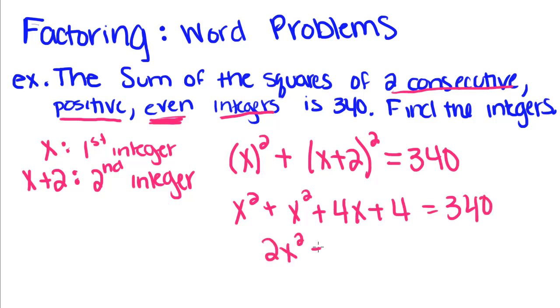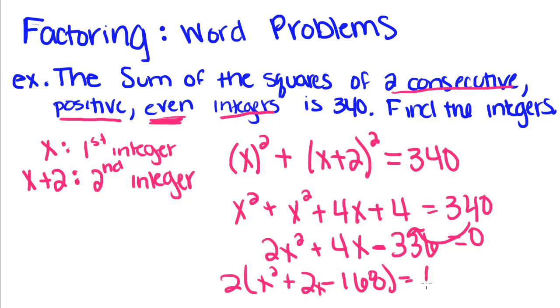We're going to combine our like terms and pull this 340 over, because remember when we solve equations by factoring we have to set it equal to 0. We get 2x squared plus 4x minus 336 equals 0. We can factor 2 out: x squared plus 2x minus 168 equals 0.